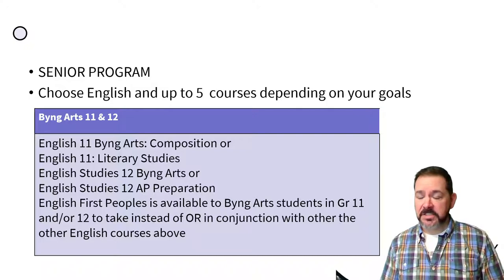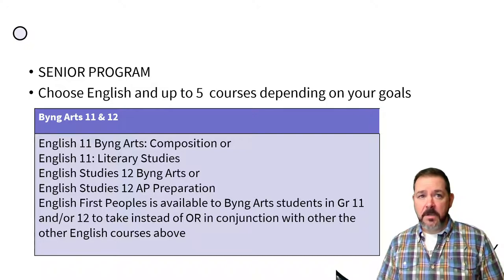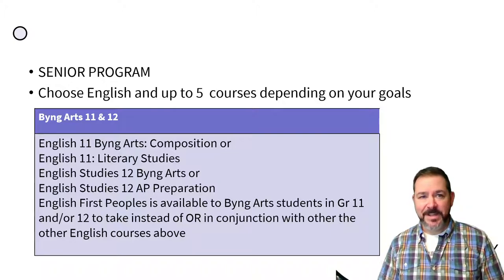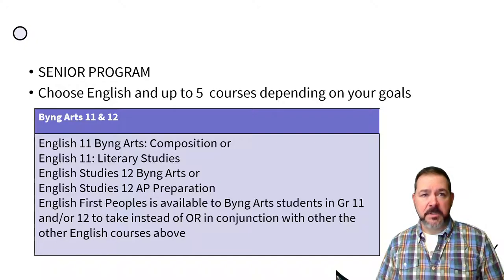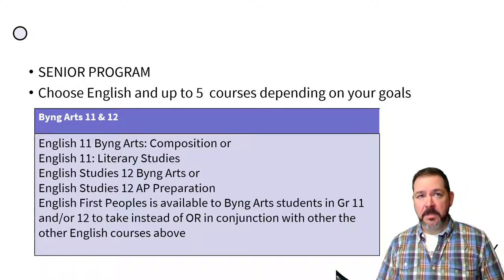Same thing with the grade 12 program — you can take the English Studies 12 Bing Arts class, or you can take the more challenging AP Prep class with the opportunity to submit a test to get first year university credit. First Peoples can be taken instead of either of those or in conjunction. Some great opportunities in the English department — speak with your English teacher for guidance on what's available to you at the senior level.